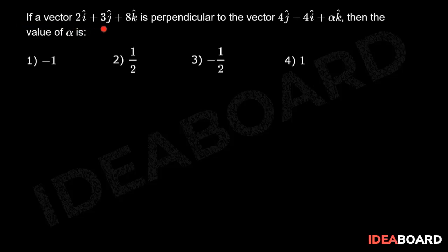If a vector 2i cap plus 3j cap plus 8k cap is perpendicular to the vector 4j cap minus 4i cap plus alpha k cap, then the value of alpha is.